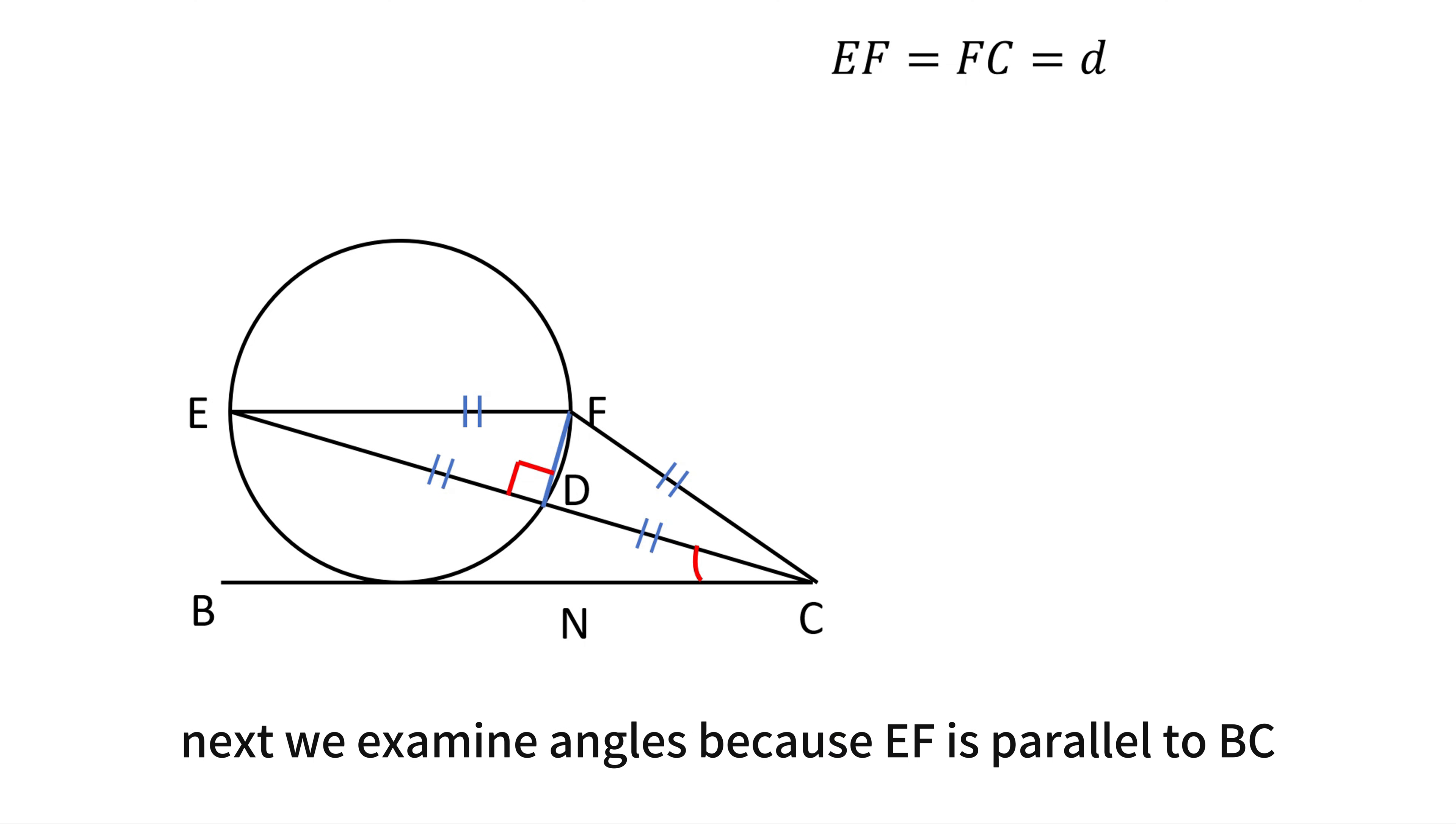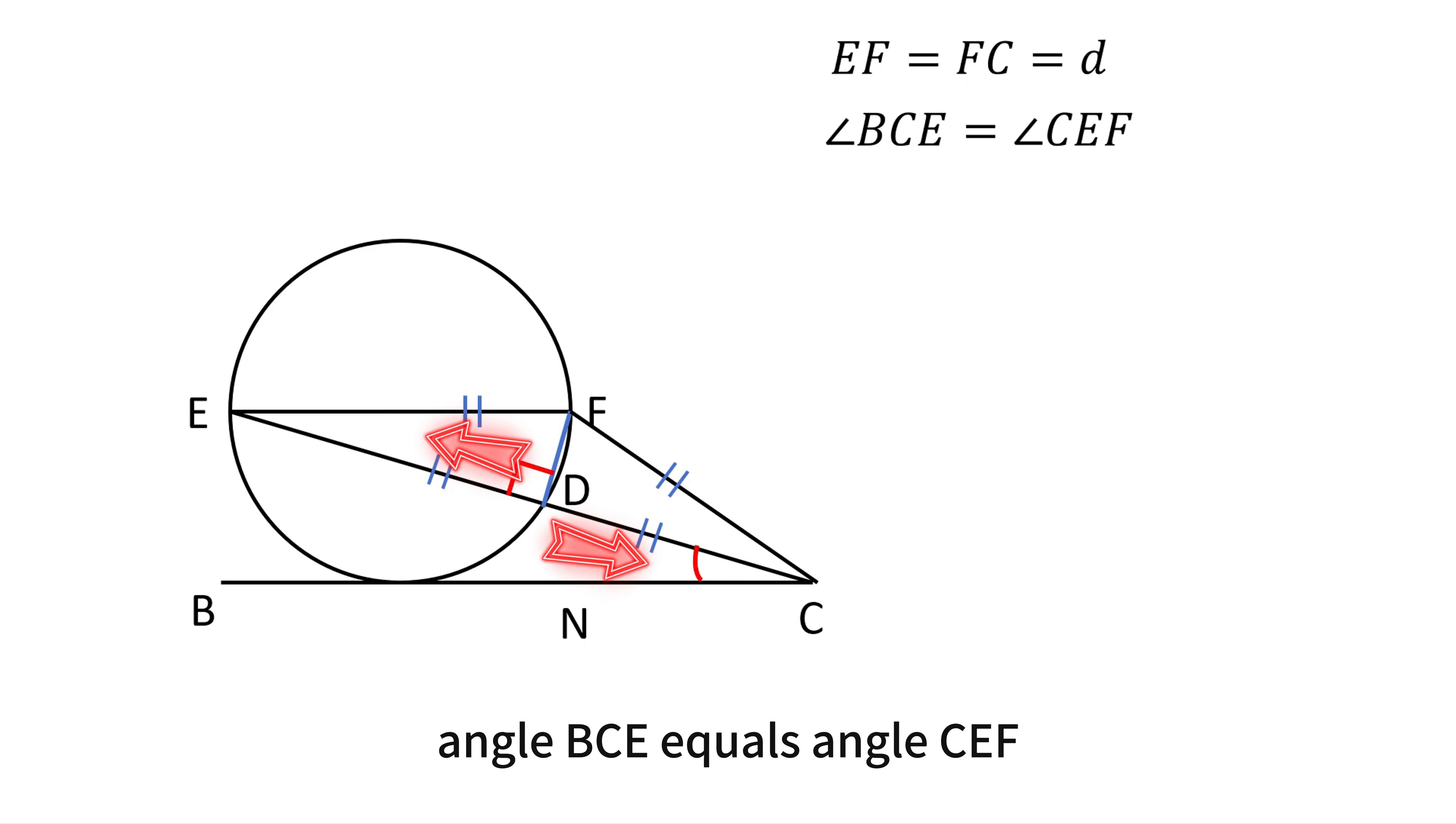Next, we examine angles because EF is parallel to BC. Angle BCE equals angle CEF as alternate interior angles. Also, in triangle CEF, since FC equals FE, both length D, the triangle is isosceles with angle CEF equal to angle FCE.